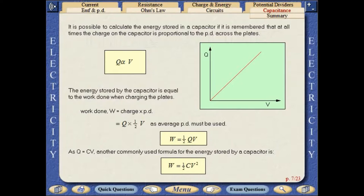It is possible to calculate the energy stored in a capacitor if it is remembered that at all times the charge on the capacitor is proportional to the PD across the plates. The energy stored by the capacitor is equal to the work done when charging the plates.